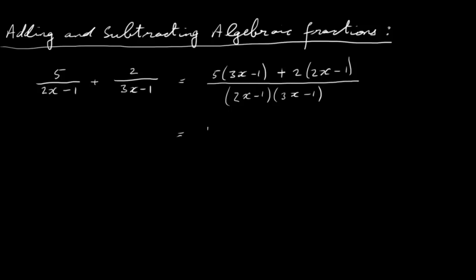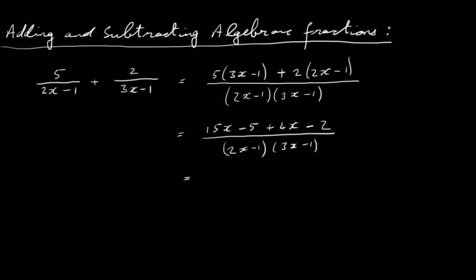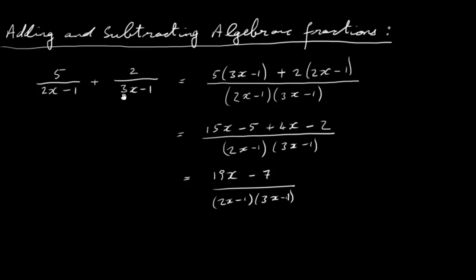Now let's multiply out. We have 5 times 3x is 15x, 5 times minus 1 is minus 5, plus 2 times 2x is 4x, and minus 2 times 1 is minus 2. That's all over 2x minus 1 times 3x minus 1. Simplifying: 15x plus 4x gives 19x, and minus 5 minus 2 gives minus 7. So the result is 19x minus 7 over 2x minus 1 times 3x minus 1.